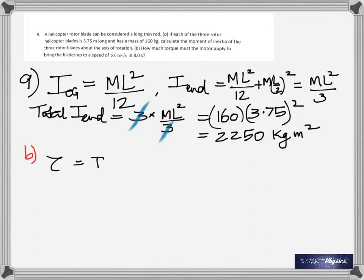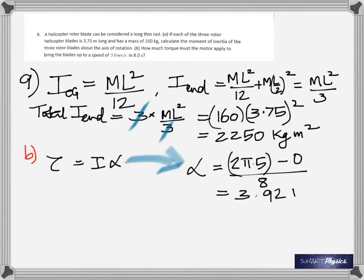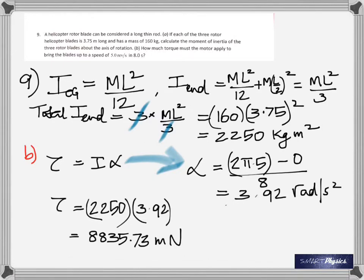For part (b) — how much torque must the motor apply to bring the blades from rest to 5 revolutions per second in 8 seconds — the initial angular velocity is 0 and the final angular velocity is 2π × 5. Using tau = I × alpha, where alpha = (2π × 5 − 0) / 8, multiply by 2,250 to get the required torque.